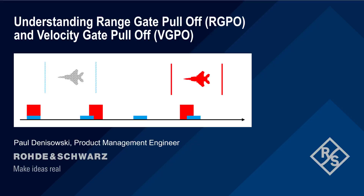Hello, and welcome to this presentation: Understanding Range Gate Pull-Off and Velocity Gate Pull-Off. This presentation provides a short technical introduction to these two types of deceptive jamming and how they're used in electronic warfare scenarios.